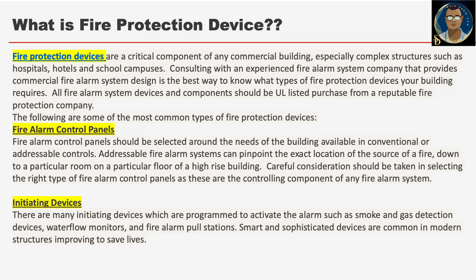Fire alarm control panels should be selected around the needs of the building, available in conventional or addressable controls. Addressable fire alarm systems can pinpoint the exact location of the source of a fire down to a particular room on a particular floor of a high-rise building. Careful consideration should be taken in selecting the right type of fire alarm control panels as these are the controlling components of any fire alarm system. There are many initiating devices programmed to activate the alarm, such as smoke and gas detector devices, water flow monitors and fire alarm pull stations. Smart and sophisticated devices are common in modern structures, improving to save lives.